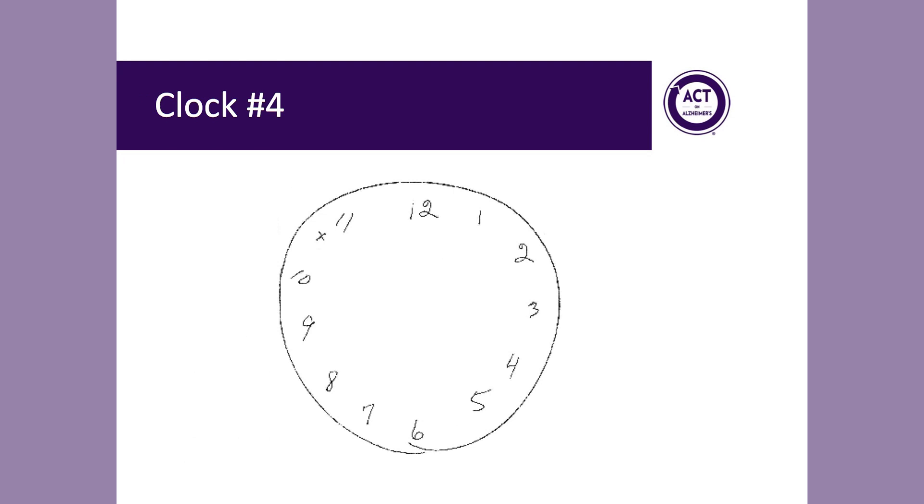In clock number 4, all of the numbers 1 through 12 are represented with no duplicate or missing numbers. The anchor numbers are also roughly in their correct location. However, this patient, instead of including hands of the clock, drew a small x between the number 10 and 11. Because no hands are present, the scoring for this clock would be 0 points.